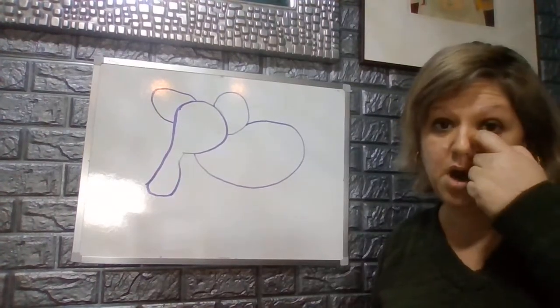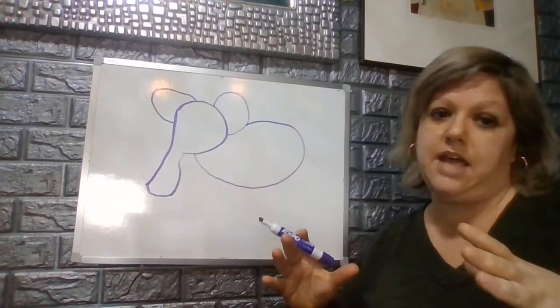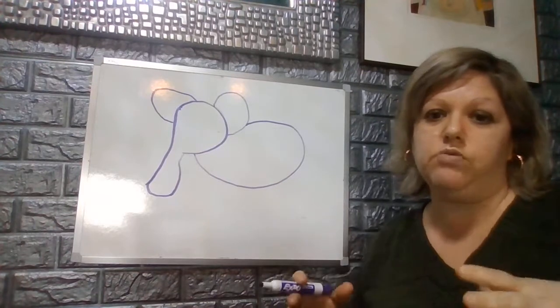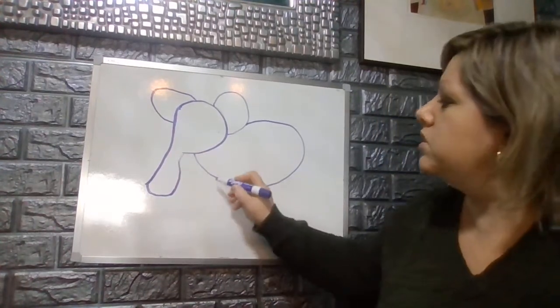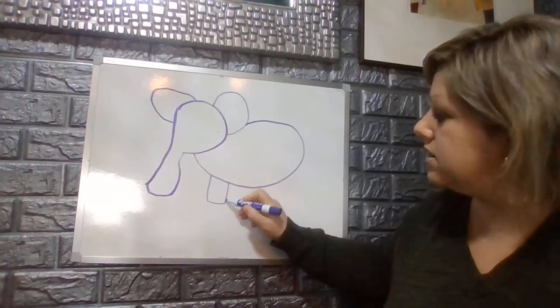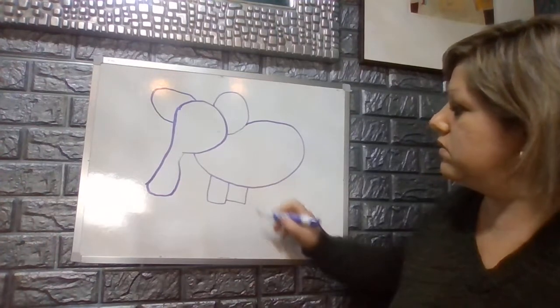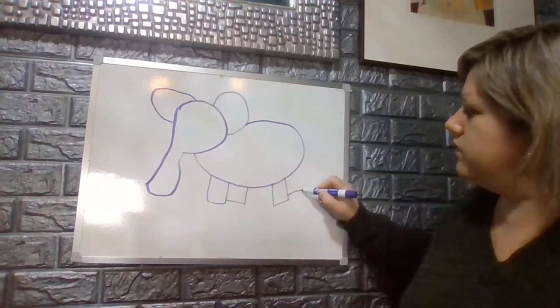The next thing we're going to put on our picture is four large rectangles. And that's going to represent the elephant's feet. So we're going to do one and then we're going to attach the second one. Two, three, four.